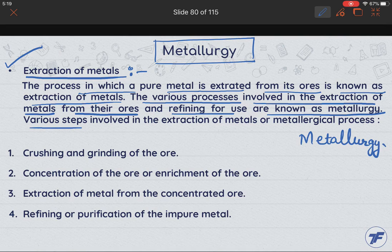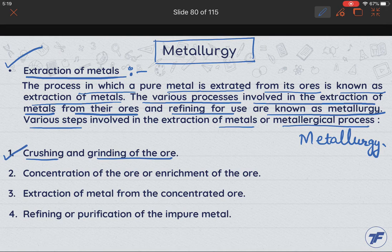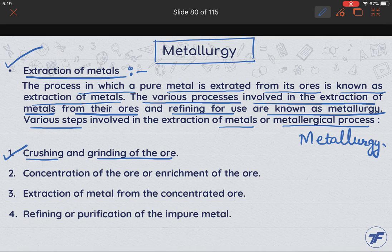If we talk about the various steps involved in the Extraction of Metals or the Metallurgy processes, the first step is Crushing and Grinding of the Ores. All the ores are found on the earth's crust. The ores and rocks can be bigger and have many impurities present. The process of crushing and grinding of the ores is very useful to convert the bigger ores into smaller ones.